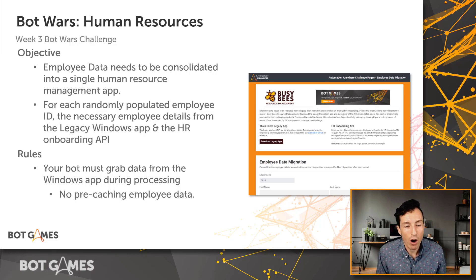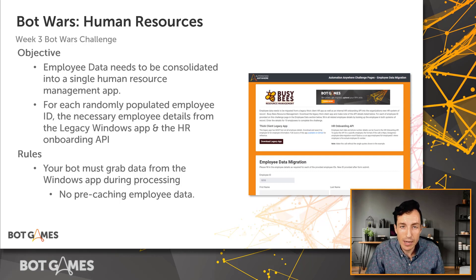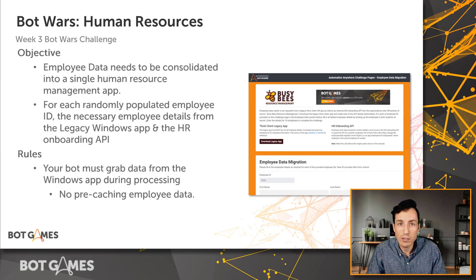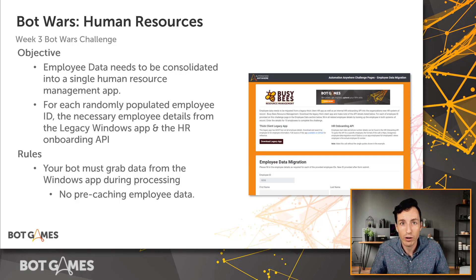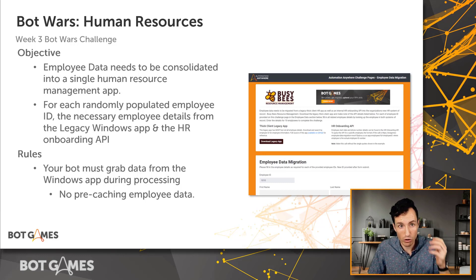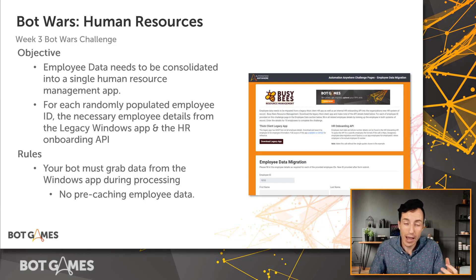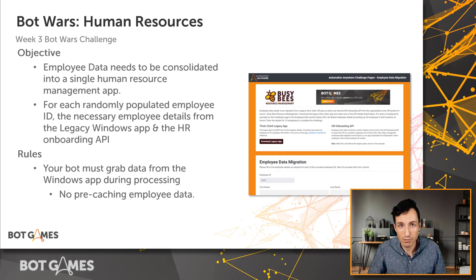Our only rule for this week is that your bot must grab the data from the Windows application during processing. That means we don't want to see you pre-caching all of the data for all employees, because that's not really practical — that's not how a real bot would work, especially if you're building it for work. What you'll need to do is launch that Windows application and extract data from it, as well as from the API, during your bot's processing.